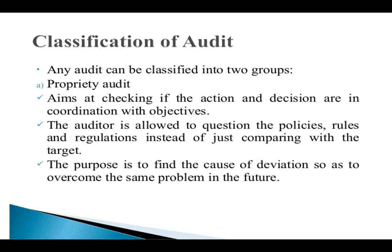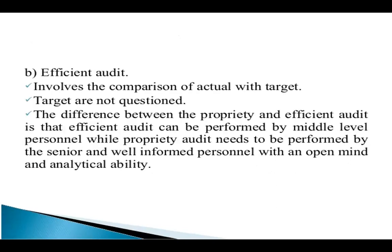In the implementation process there may also be some uncontrollable factors behind deviations, which we cannot fully overcome but can minimize their repercussions. The second type of audit is the efficient audit, which involves comparison of actual results with the targeted results.